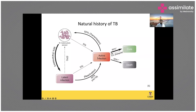If you have active TB disease and don't receive treatment, 50 percent will die — that is a critical point. However, if you treat someone with active TB disease, 95 percent will be cured. This means we have a magic bullet for tuberculosis: all we have to do is diagnose people at the correct time and treat them appropriately.